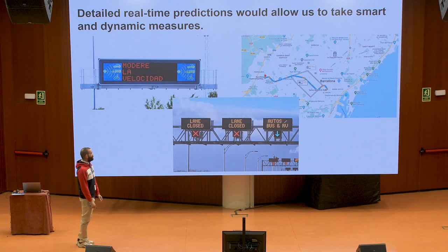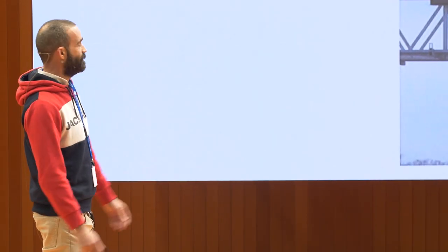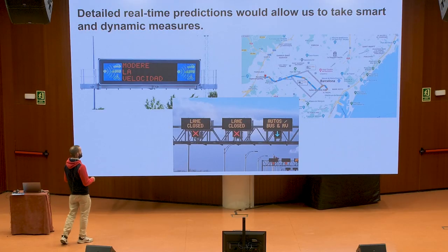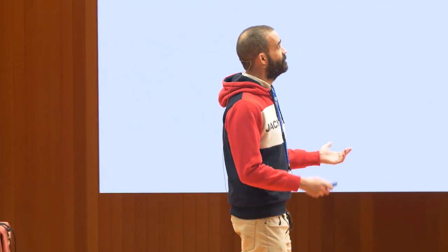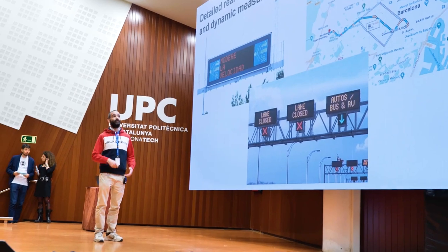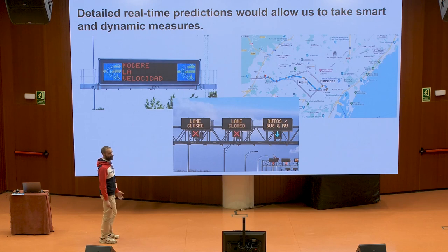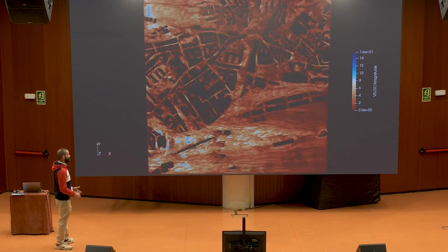It's obvious that we have to take some measures in order to solve this problem. Having real-time predictions would help us in taking immediate measures that would help lower the peak pollution concentrations in some areas. For instance, we could make drivers drive slower, close traffic in certain areas, or provide this information to Google Maps to propose alternative routes avoiding the most affected areas.